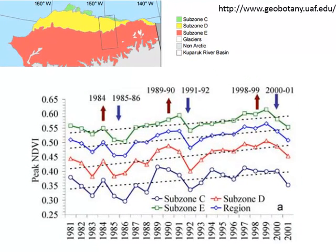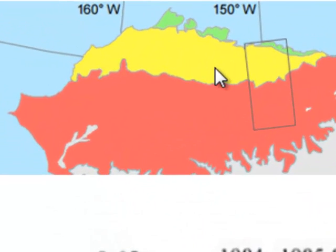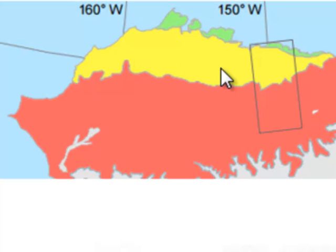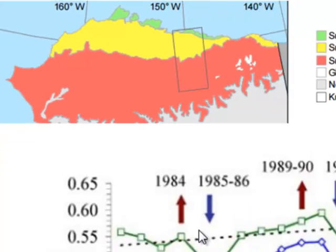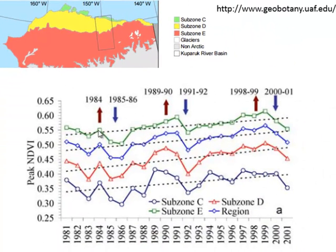Here's an example from a publication from Skip Walker's group where they looked at the Arctic tundra in Alaska, and they have three climatic zones. Subzone C, right along the Arctic Ocean, is the coldest climatic zone, and that zone consistently has the lowest summer peak NDVI. Subzone E, in the foothills of the Brooks Range, is the warmest Arctic zone, and that consistently has the highest NDVI throughout this time series.